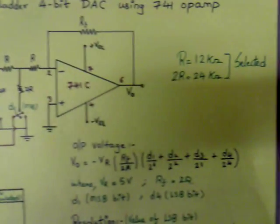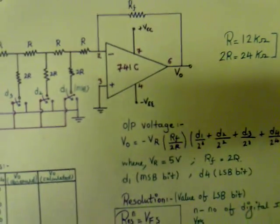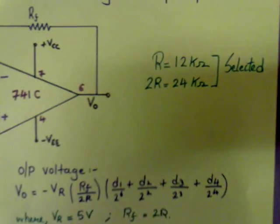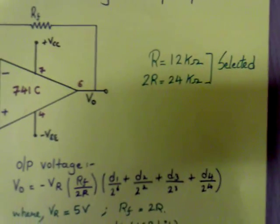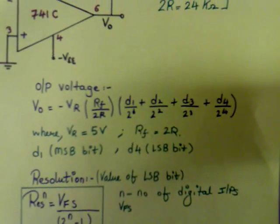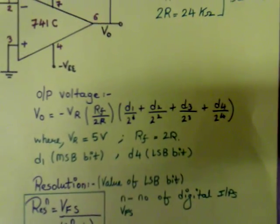The value of resistors used can be R and 2R. In this case, we have selected the value of R and 2R as 12 and 24 correspondingly. With the help of the output expression where D1, D2, D3, D4 are binary digits.